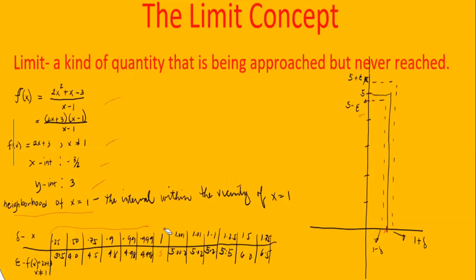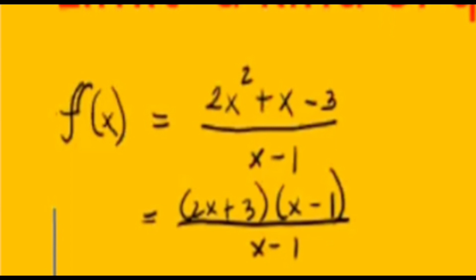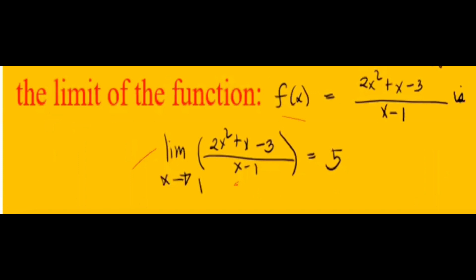That's the meaning of limits — there are numbers closer to 1 before 1 and after 1, but not exactly 1, since x equals 1 is the zero of the function. A limit is a quantity that is being approached but never reached. The limit of (2x² + x − 3) / (x − 1) equals 5 because we factor to (2x + 3)(x − 1)/(x − 1), cancel (x − 1), then substitute: 2(1) + 3 = 5.